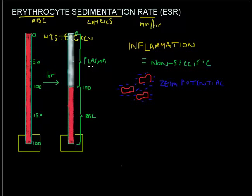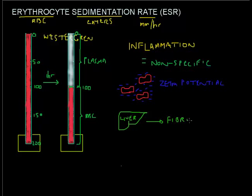If you have an episode of infection or inflammation, the body usually responds by producing molecules from the liver. The body will produce a number of proteins we call acute phase reactants, and one important example is fibrinogen — which is also very important in blood clotting. Fibrinogen is positively charged, so when it increases in the blood it will neutralize this zeta potential.